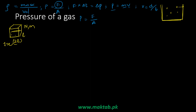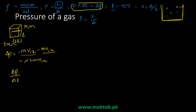The change in momentum is final momentum minus initial momentum. The final momentum is mv₁ₓ and the initial momentum is in the opposite direction, so the total change in momentum is 2mv₁ₓ. The change in time is the displacement 2L divided by the velocity v₁ₓ, giving Δt = 2L/v₁ₓ.